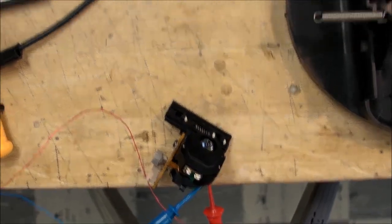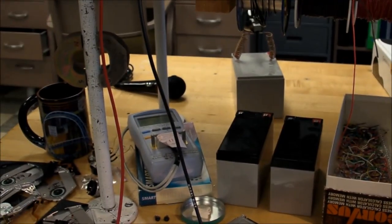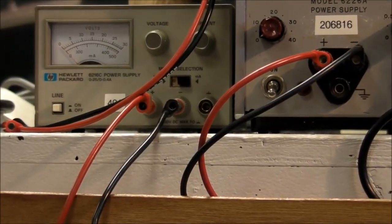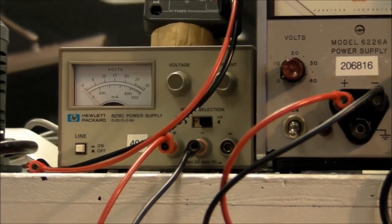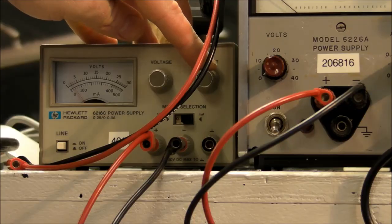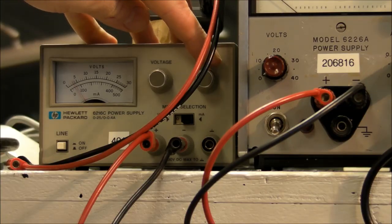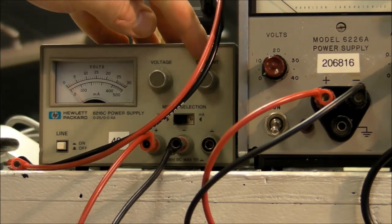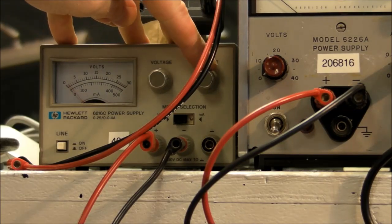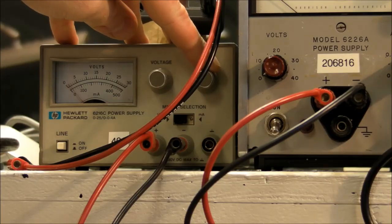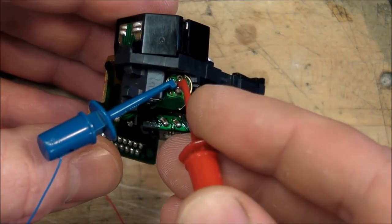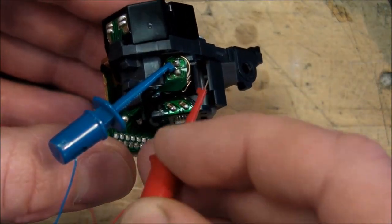I got the laser assembly hooked up to the power supply. I don't know the exact pinout, so I'm trying different connections to see what works. Right now there's no light coming out as I turn up the current to 40, 60 milliamps, but the voltage stays down at about one volt. That tells me I've got it hooked up to the photodiode that's on the inside there.